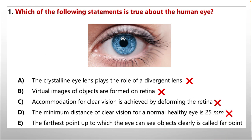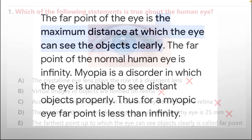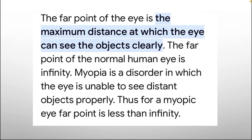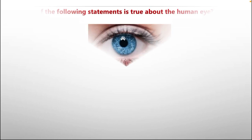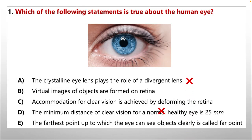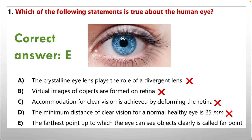Option E is correct because the far point of the eye is the maximum distance at which the eye can see objects clearly. The far point of a normal human eye is infinity. In myopia, the eye is unable to see distant objects properly, so for a myopic eye, the far point is less than infinity. All options except E are incorrect, so the correct answer is option E.